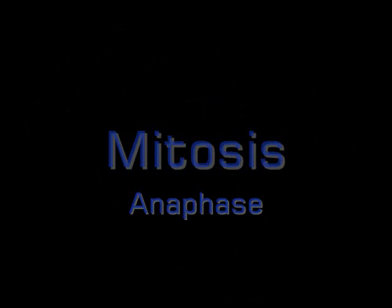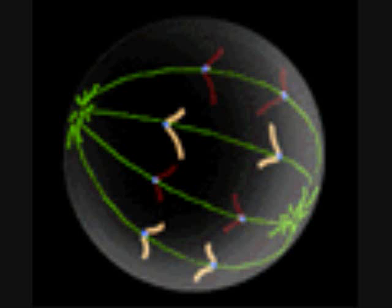In anaphase, the paired chromosomes separate the kinetochores and move to opposite sides of the cell by contracting spindle fibers.